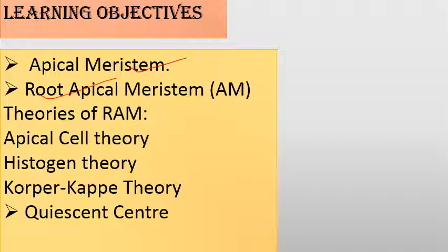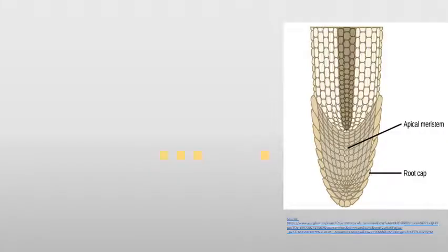We will discuss the root apical meristem, also known as RAM, and the theories of root apical meristem organization. Similar to shoot apical meristem, these include: first, apical cell theory; second, histogen theory; and third, corpus-cap theory, which is equivalent to tunica-corpus theory. We will also discuss the important topic of the quiescent center.